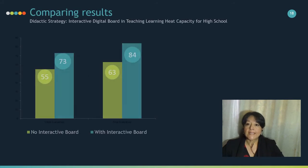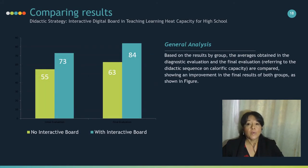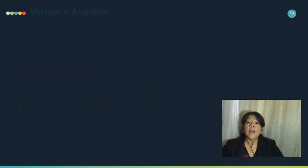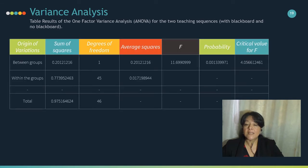In our general analysis based on results by group, the averages obtained in the diagnosis evaluation and the final evaluation referring to the didactic sequence on calorific capacity are compared, showing an improvement in the final results of both groups, as shown in the figure. According to the variance analysis applied to the samples, there is a significant difference in learning outcomes from the sequence that includes an interactive digital board.